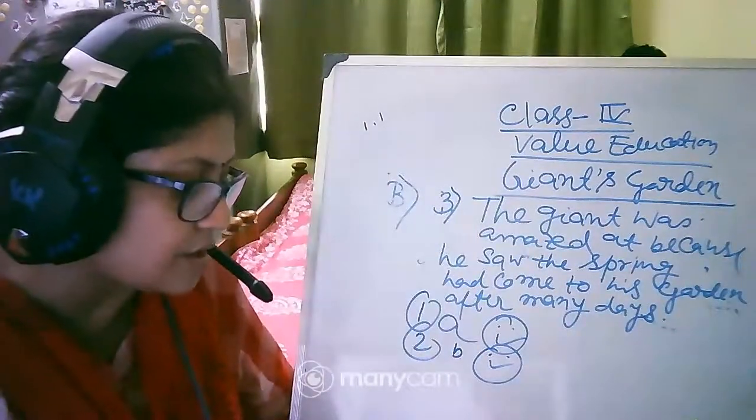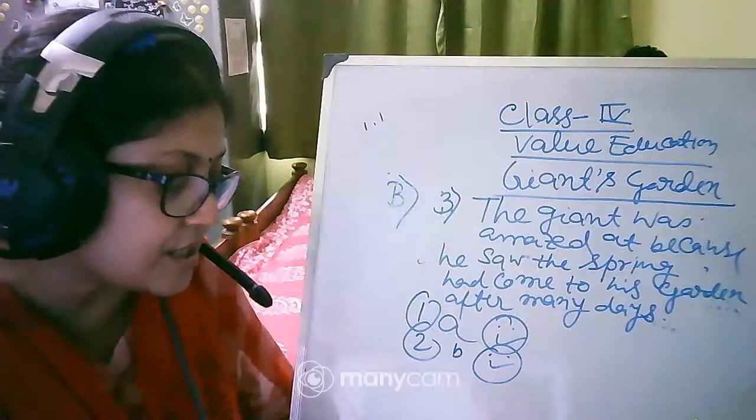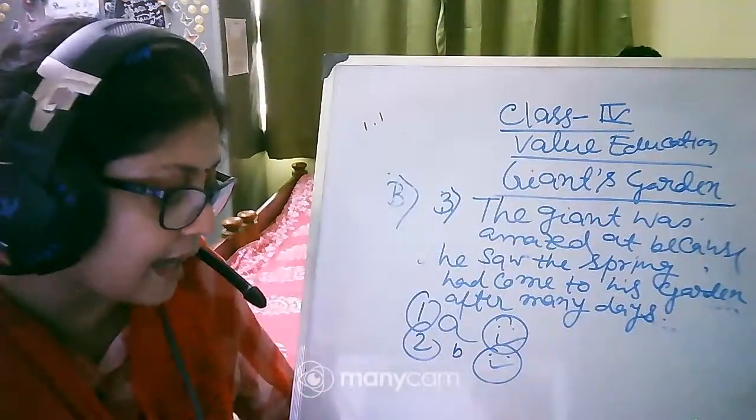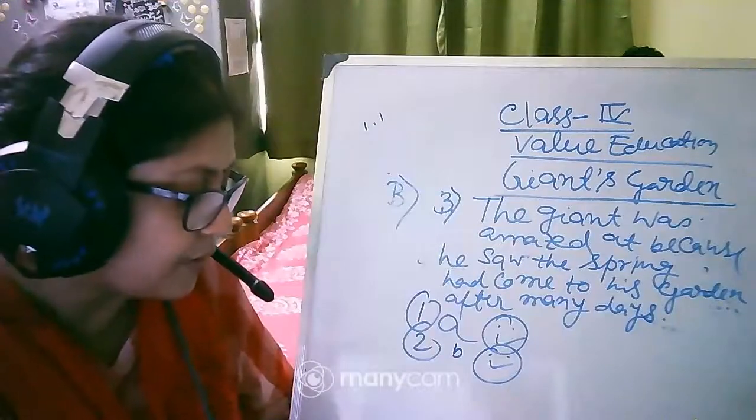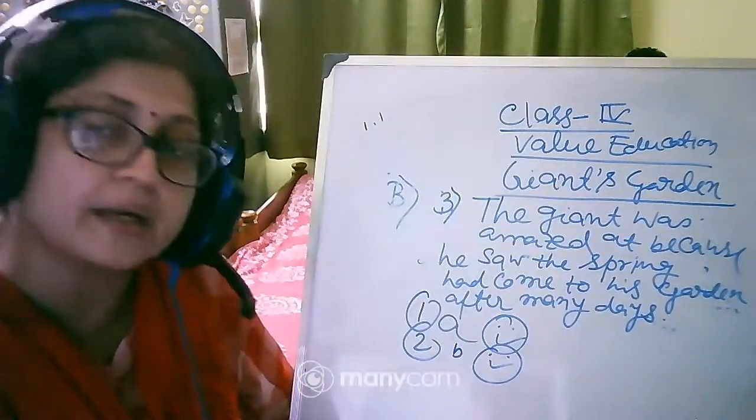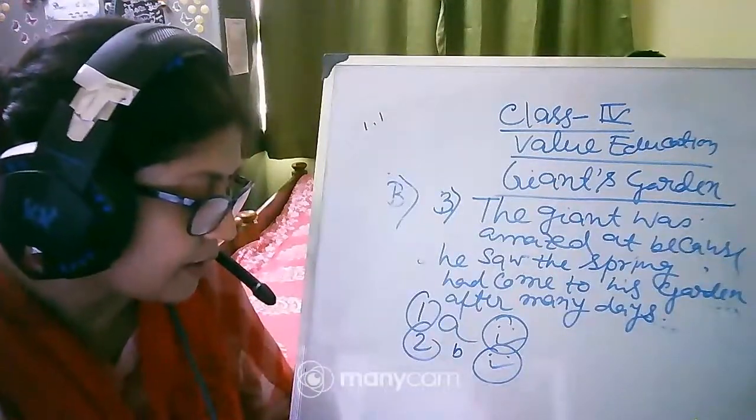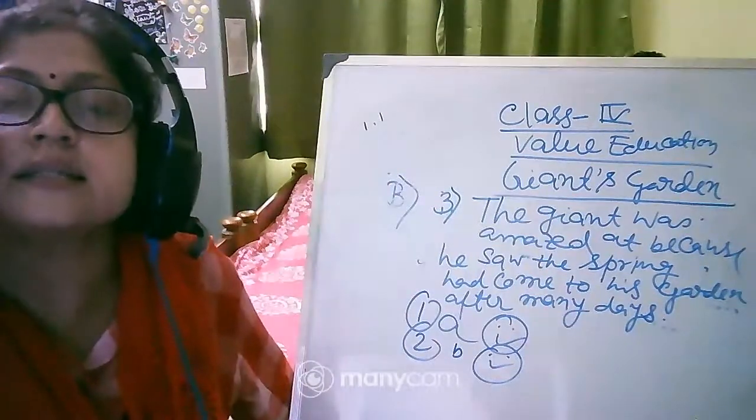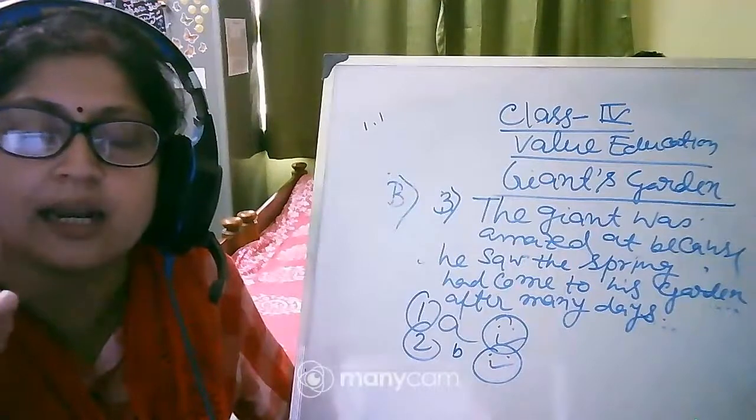Three, your house help's daughter is of your age. She does not have the toys or games to play with. When she sees you play she becomes sad. So how will you behave?